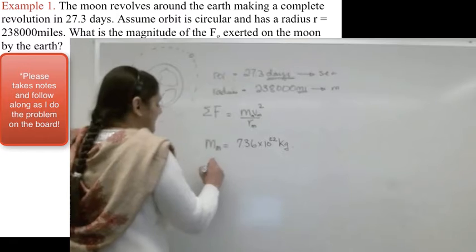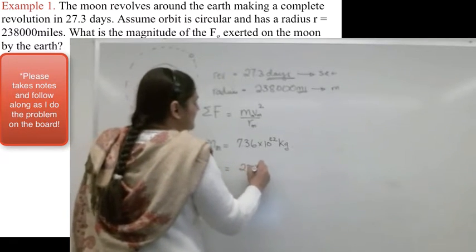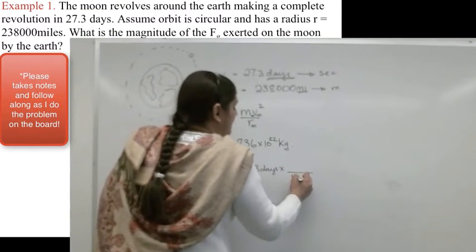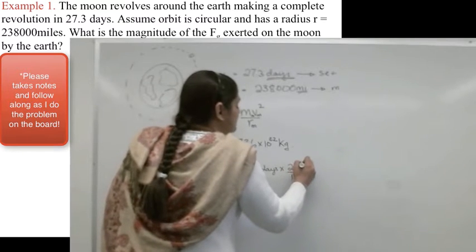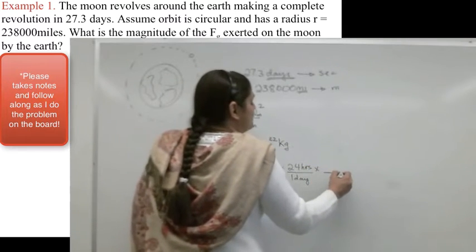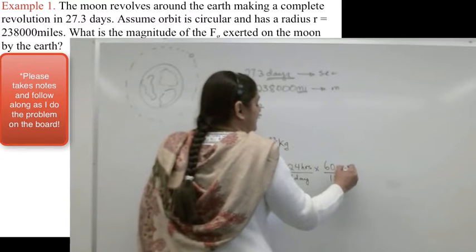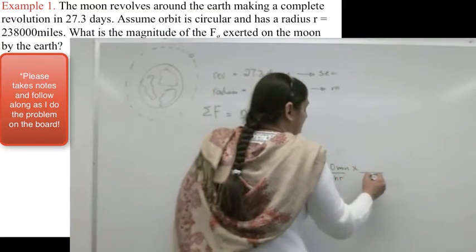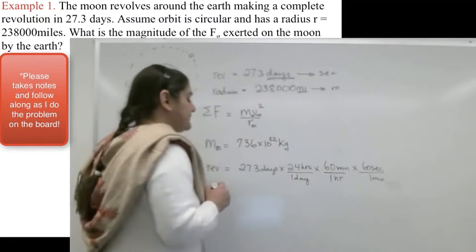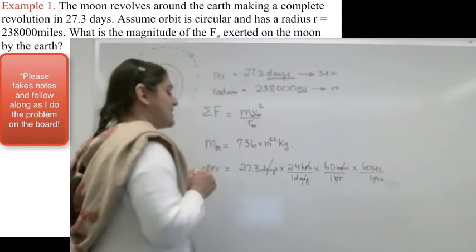So let me do that. If my revolutions, which is going to be my T, is going to be 27.3 days, how many hours? 24 hours in one day. Times 60 minutes in an hour, and then there are 60 seconds in a minute. So the days get canceled, the hours get canceled, the minutes get canceled, and my answer comes out to be in seconds.